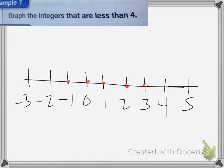Notice I'm not drawing a line. If I drew a line like this, that would include 2½, 1¾, 0.1. I'm just looking for integers, so that's only whole numbers. I cannot use a line because that represents all the numbers. I have to put a dot on each of the integers that are less than 4.